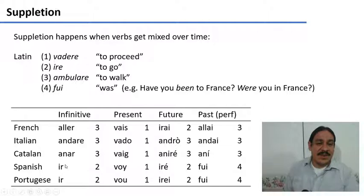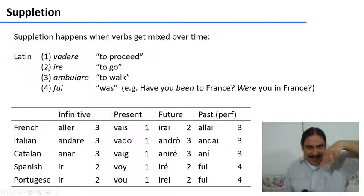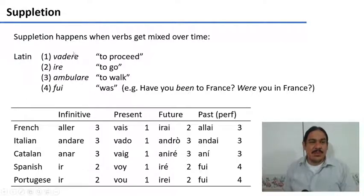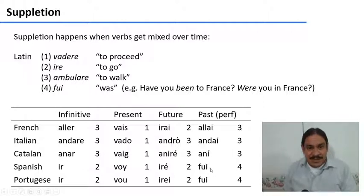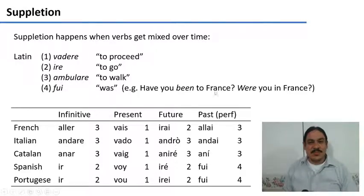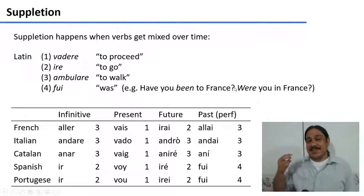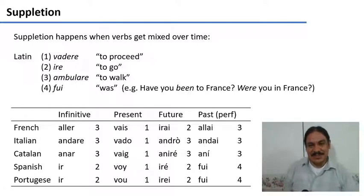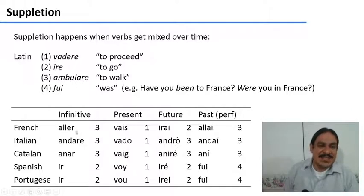For example, in Spanish 'ir', the infinitive comes from the Latin verb 'ire', the actual Latin word to go. But the present tense 'voy' comes from the word 'vadere', which meant 'to proceed'. The future also comes from 'ire', but the past tense 'fui' comes from the past of the verb 'to be' — it was 'was', as in 'were you in Paris', which became 'were you going to Paris' over time. Each Romance language chose some combination of these source verbs to make the single verb 'to go'.